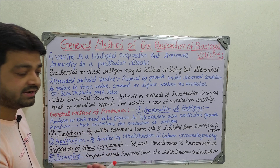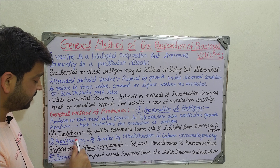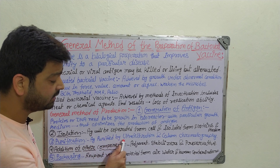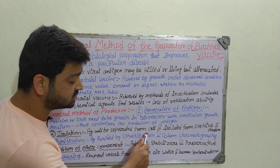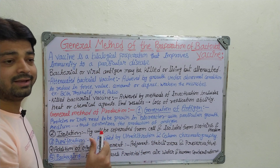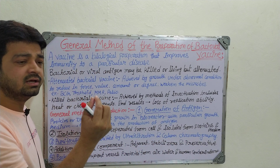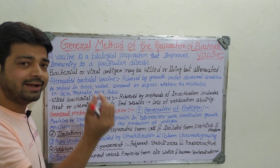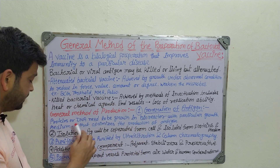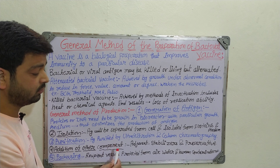The third step is purification. After separation, the antigen is purified using ultrafiltration and column chromatography techniques, so that we obtain a pure antigen suitable for use in the vaccine.